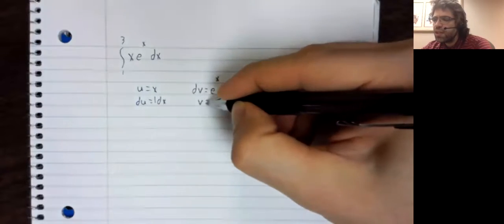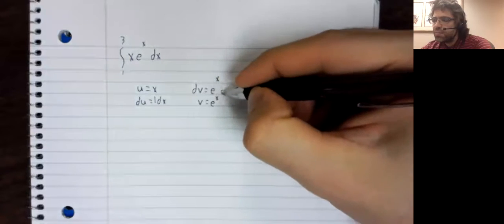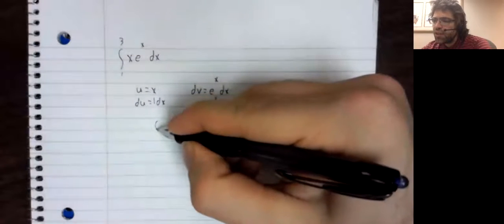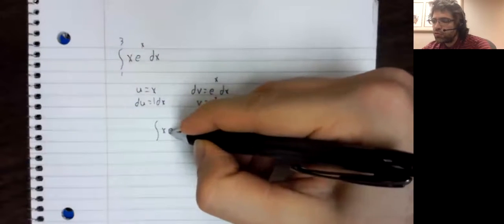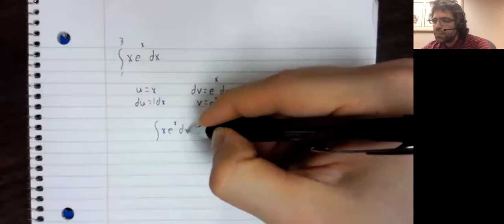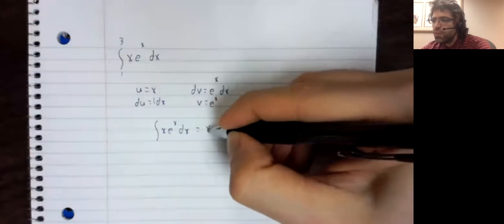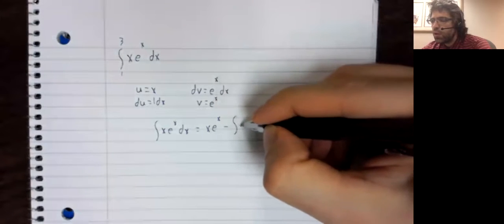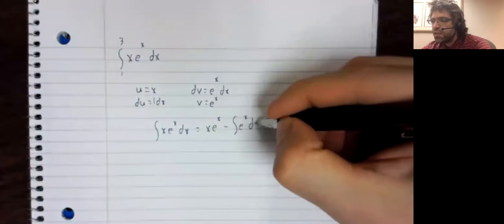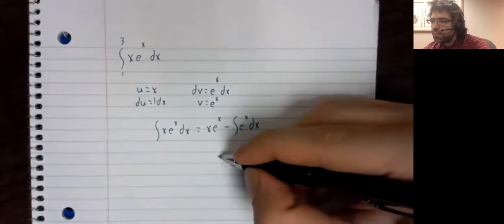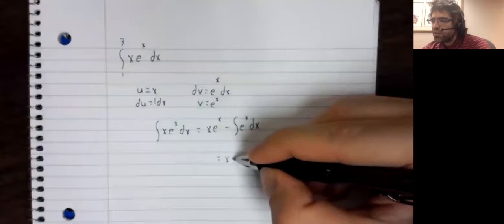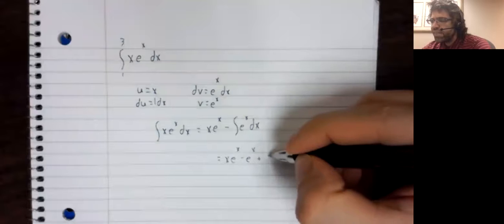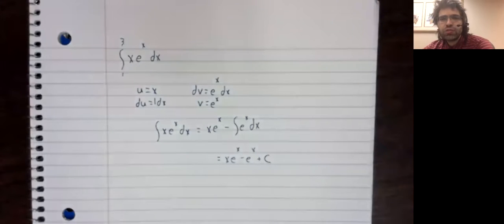And the indefinite integral is then uv minus the integral of v du, or x e to the x minus e to the x plus a constant of integration.